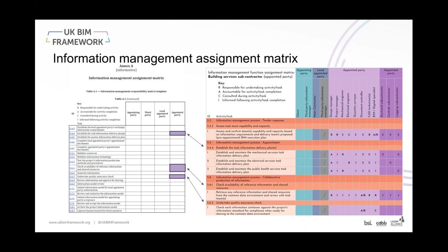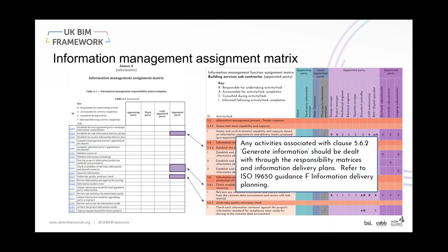The purpose of moving to an information management function and away from the PAS information manager roles is that these activities need assigning across the team — everyone needs to play their part, and it's not always going to the BIM specialist. Rob and I want to develop this into a full resource across all activities as a usable tool. Clause 5.6.2, which is all about generating information, is firmly dealt with in the various responsibility matrices and information delivery plans — so we wouldn't include that as part of the information management assignment matrix.